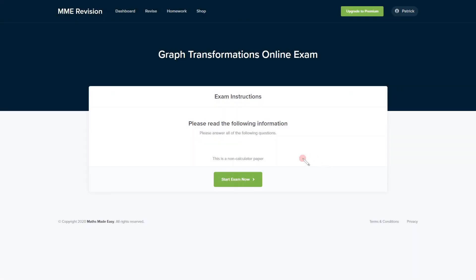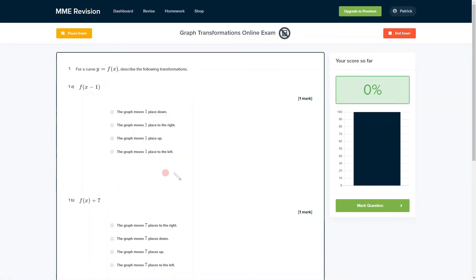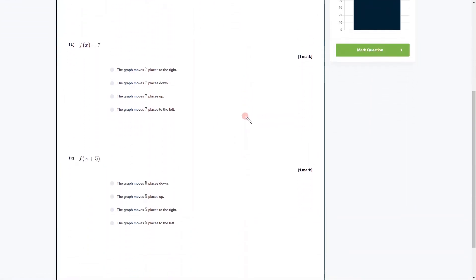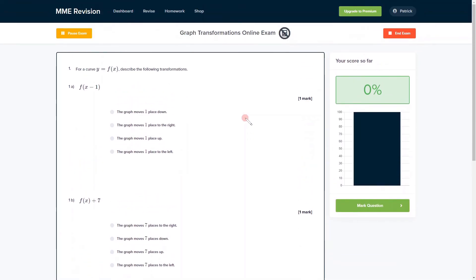Now understanding graph transformations is an important skill, so if you'd like to get some more practice in preparation for your exam, then you can have a go at our online exam. You'll find loads of different questions, all of which you'll get instant feedback on so you can keep track of the areas that you need to improve at. If you're interested, you can have a go at the exam now and click the link below.